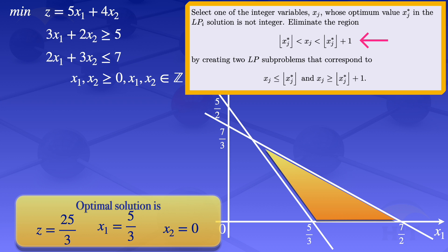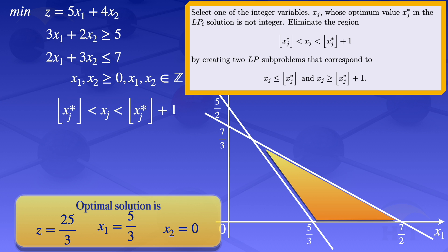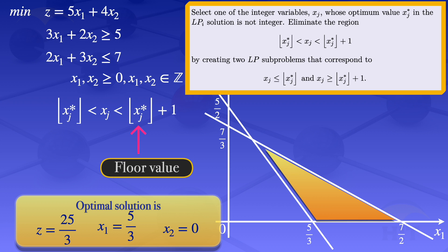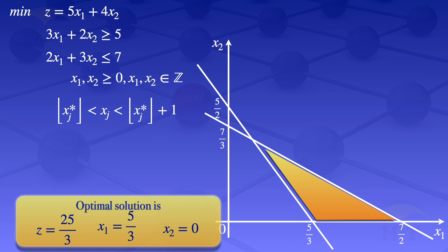We go on and eliminate the region which is greater than the floor value of x* sub j but less than the floor value of x* sub j plus 1. So for x1 we take the floor of 5 over 3, which is 1, and the floor of 5 over 3 plus 1 is 1 plus 1 equals 2. So we exclude the region where x1 is strictly between 1 and 2.